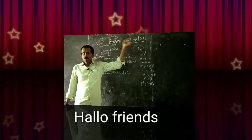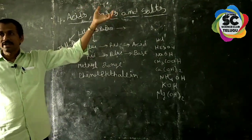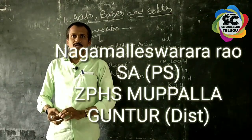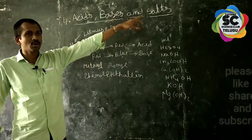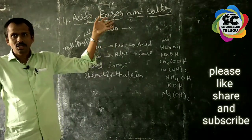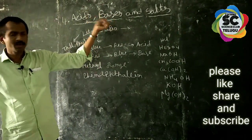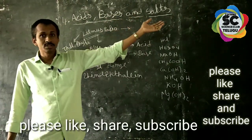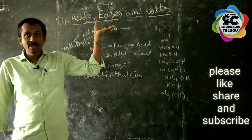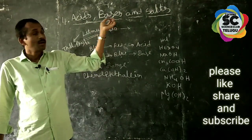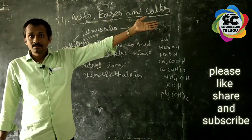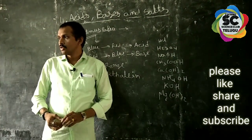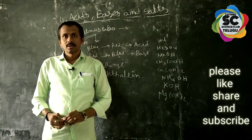This chapter started in 7th class. In 7th class we learned the introduction of acids, bases and salts — what is an acid, what are its primary properties, what is a base, what are its primary properties, and what are salts. Acids and bases mixed with each other form salts and water. These things were learned from 7th class up to 9th class.